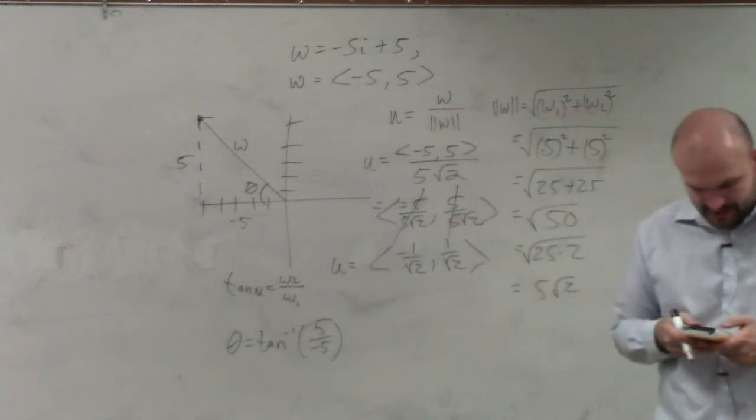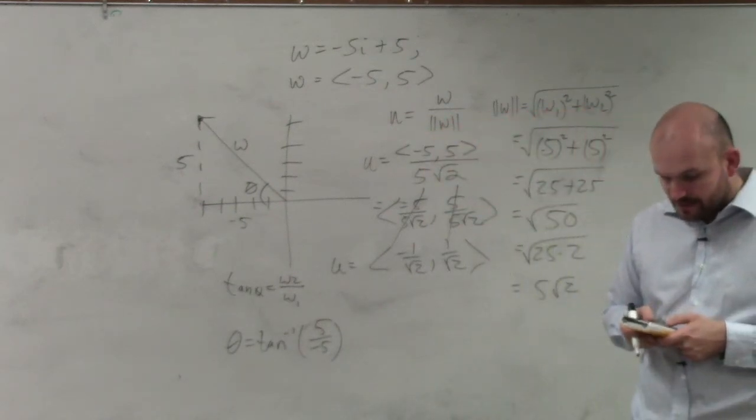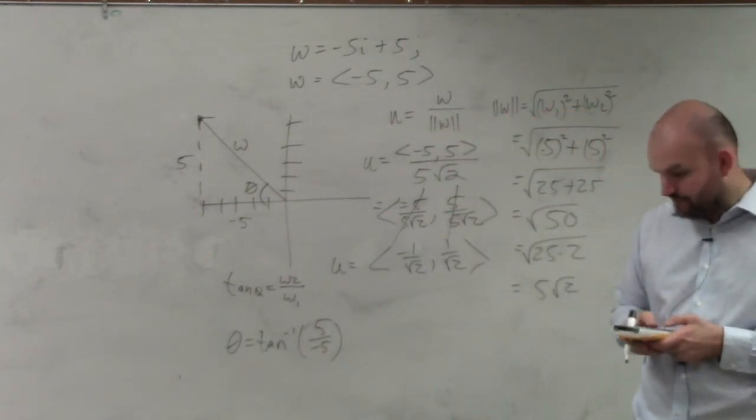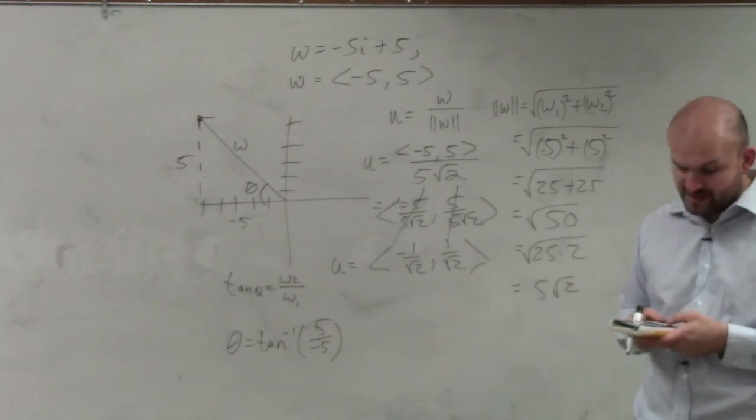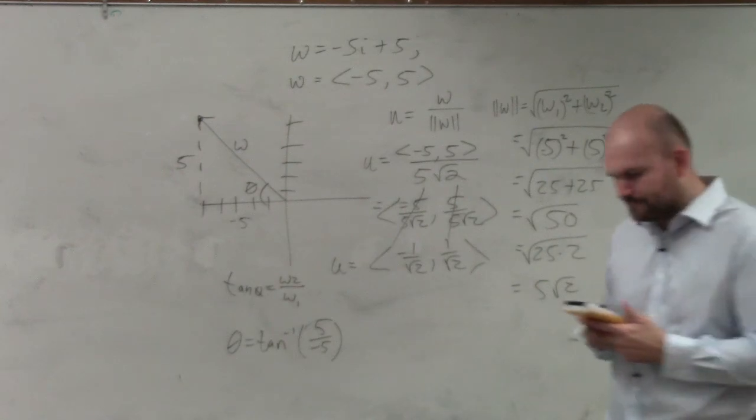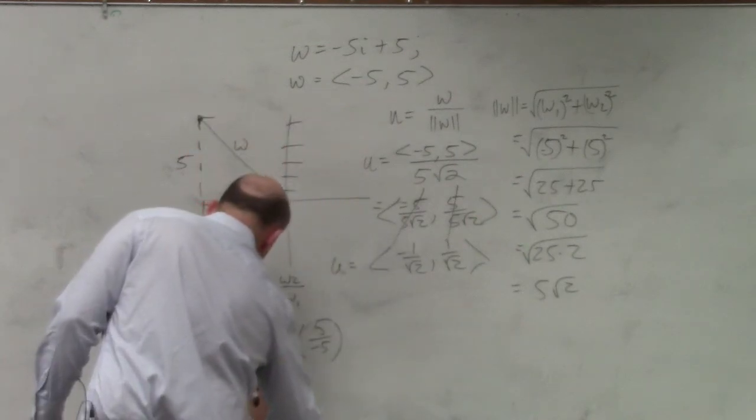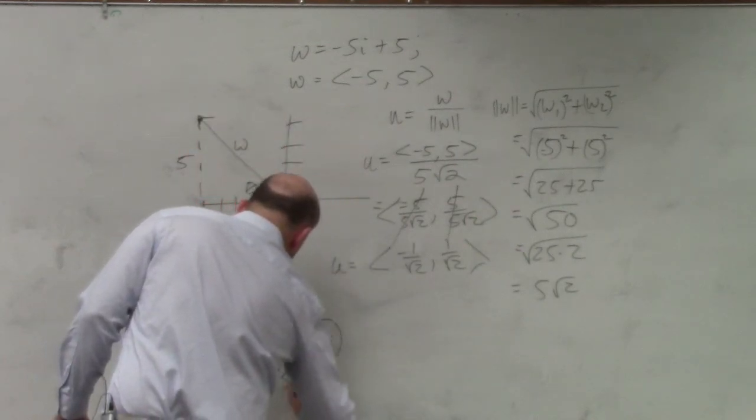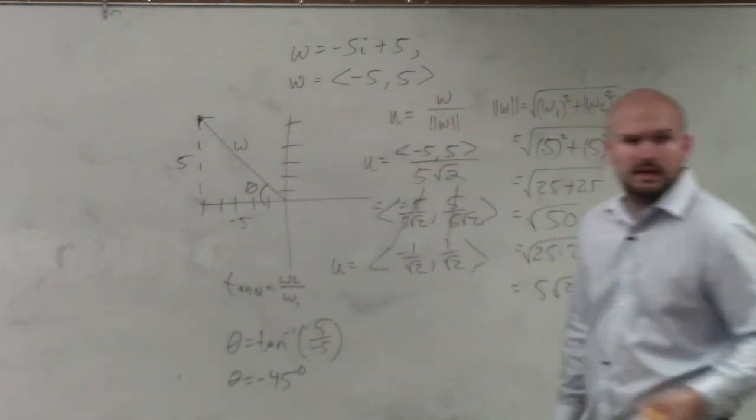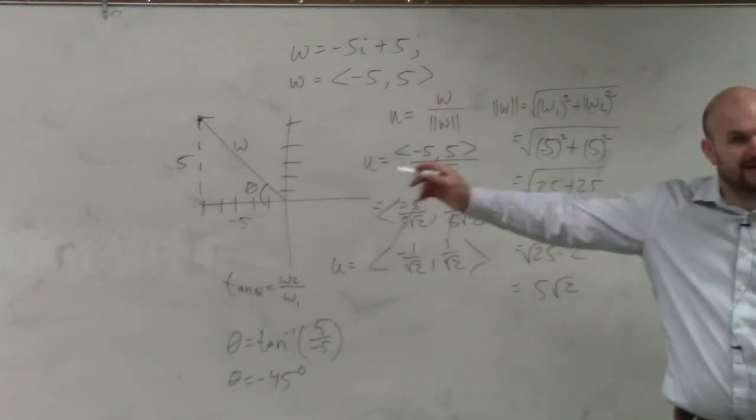So I just make sure my calculator is in degree mode. It is. And I'll just do tangent inverse of 5 divided by negative 5, which is negative 1. And I get negative 45 degrees, which actually I should have known that.